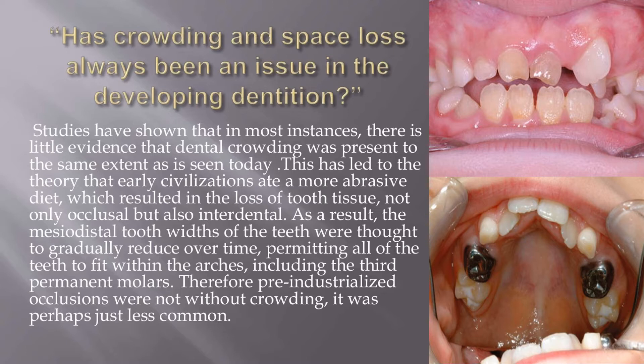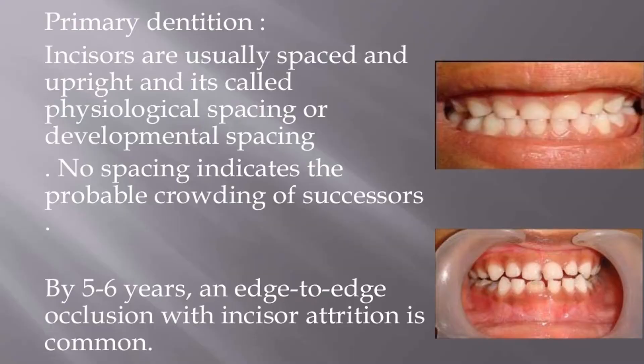In the primary dentition, incisors are usually spaced and upright — this is called physiological or developmental spacing. No spacing indicates the probable crowding of successors. By 5–6 years, an edge-to-edge occlusion with incisor attrition is common.